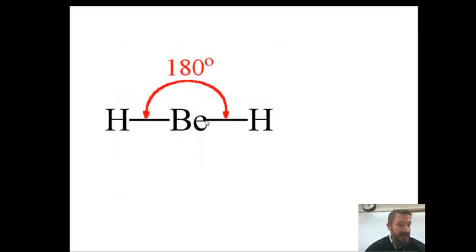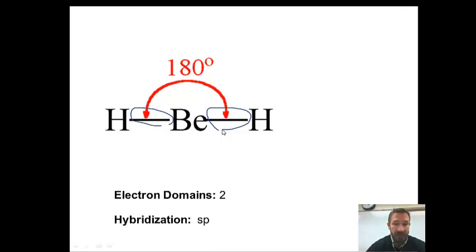Let's do another one. This is BeH2. BeH2 would have one, two electron domains. And with two electron domains, you use one S and one P orbital. So it's called SP.